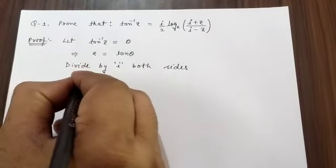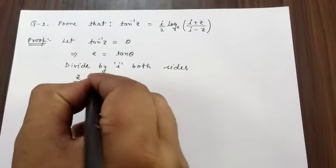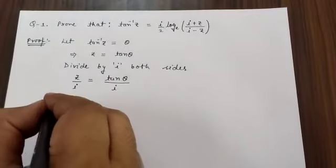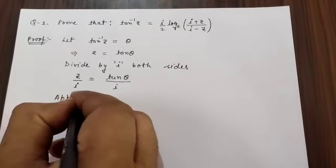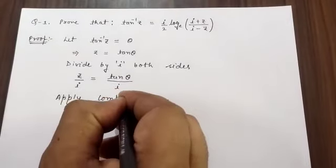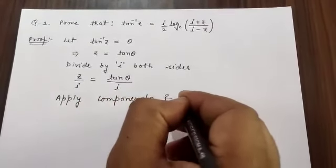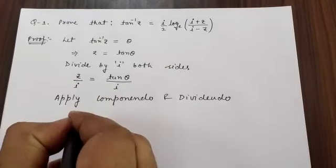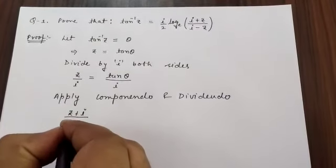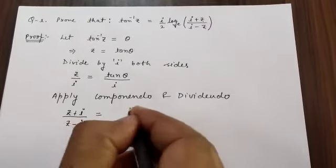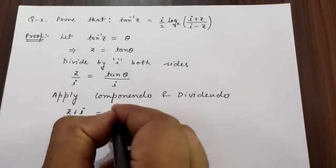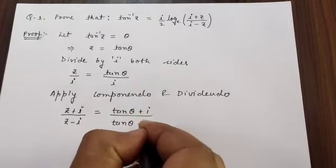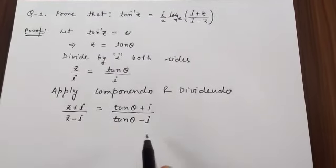Now apply the componendo and dividendo property. We get (z+i)/(z-i) = (tan θ + i)/(tan θ - i), since numerator plus denominator over numerator minus denominator gives us that result.